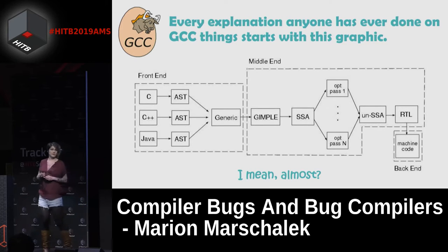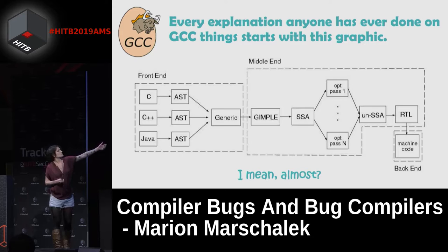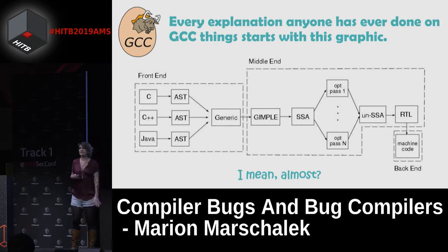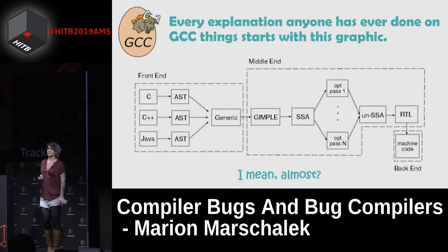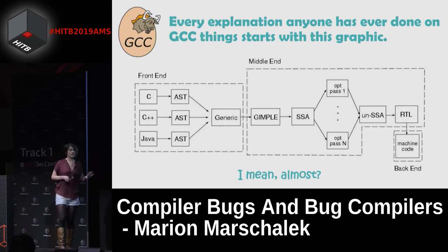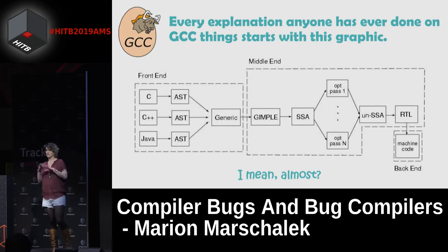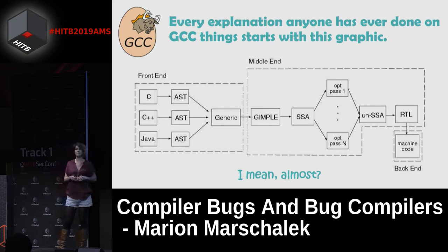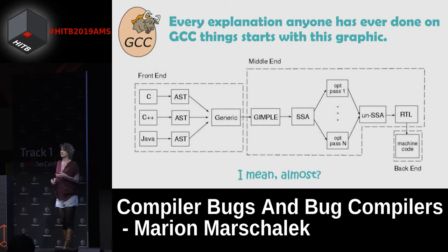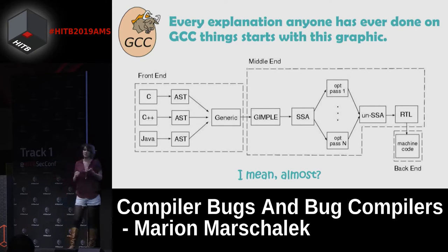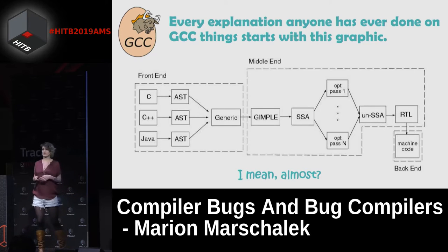The stages important for us today are GIMPLE and RTL. GIMPLE is closer to the actual source code that was put in, and RTL is closer to the actual machine code. I've been working on GCC for more than a year and have not ever touched the actual optimization passes. I've mostly focused on RTL and GIMPLE as representations where we can tap in to either secure source code or bugify source code — or secure or bugify the assembly representation.